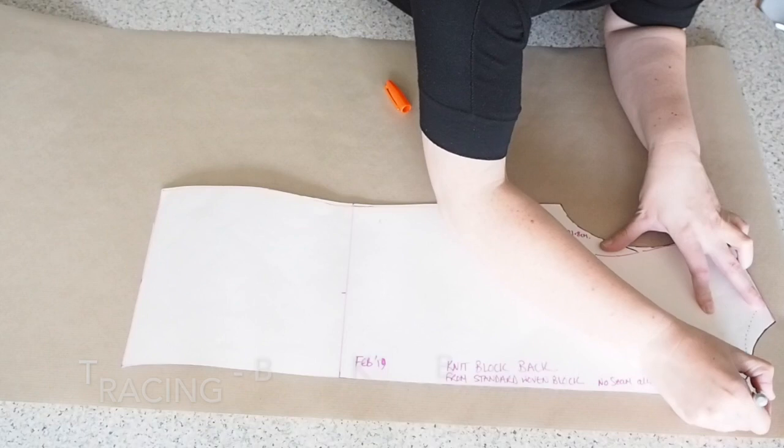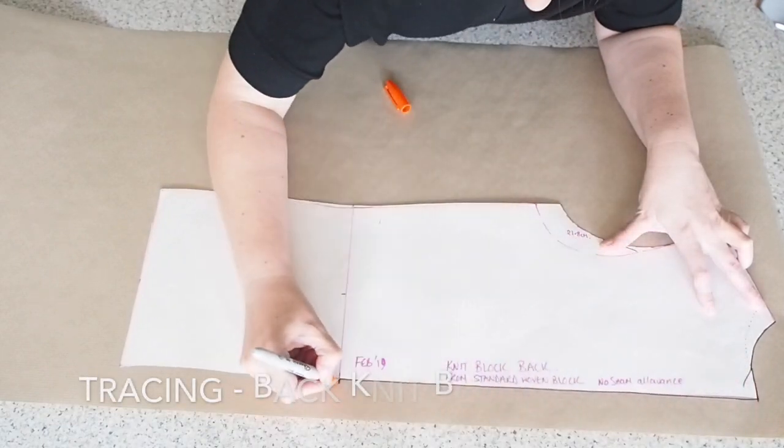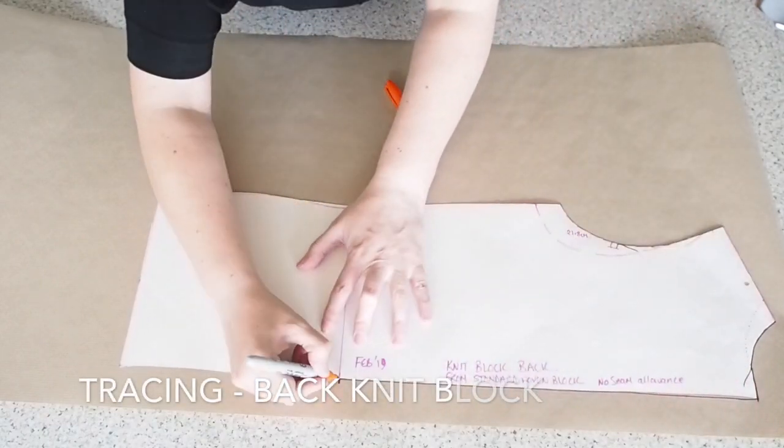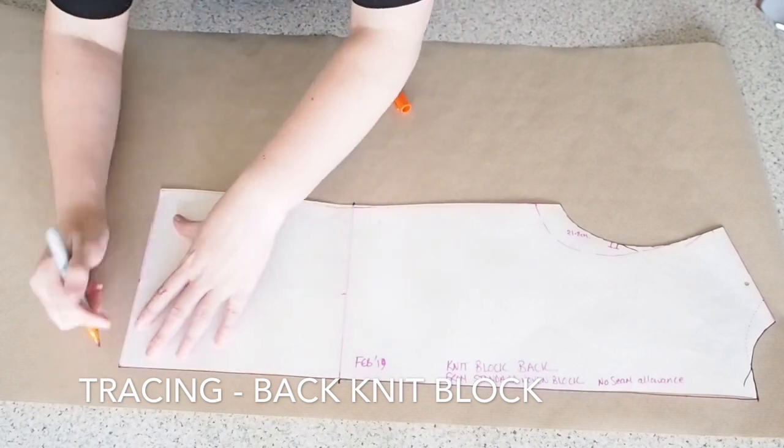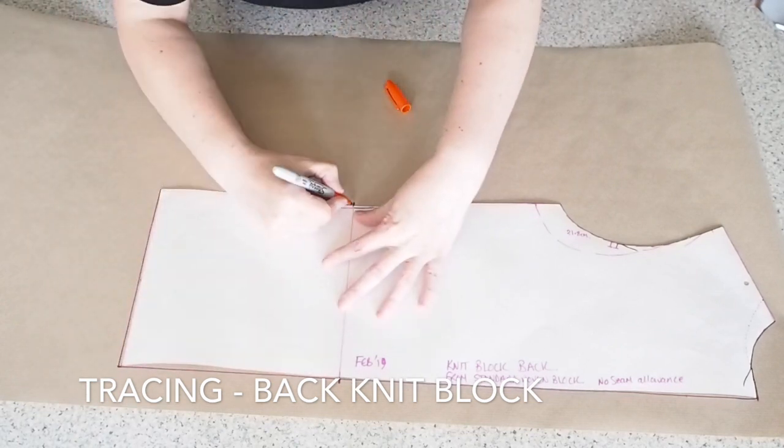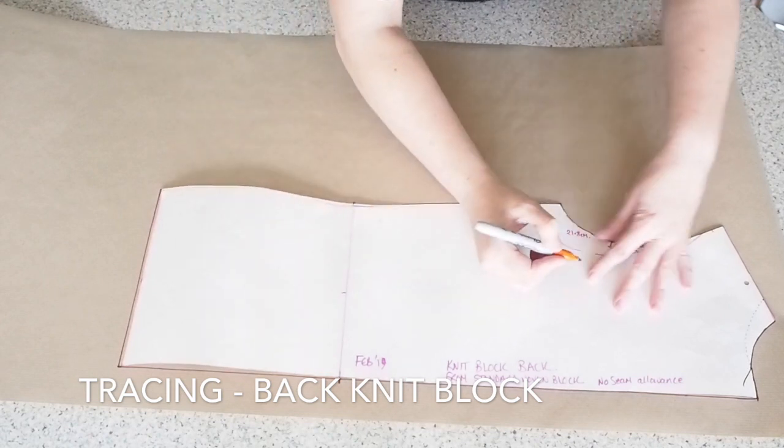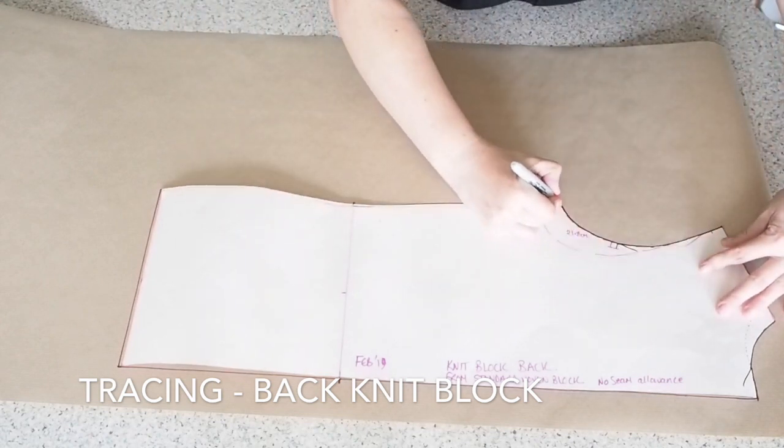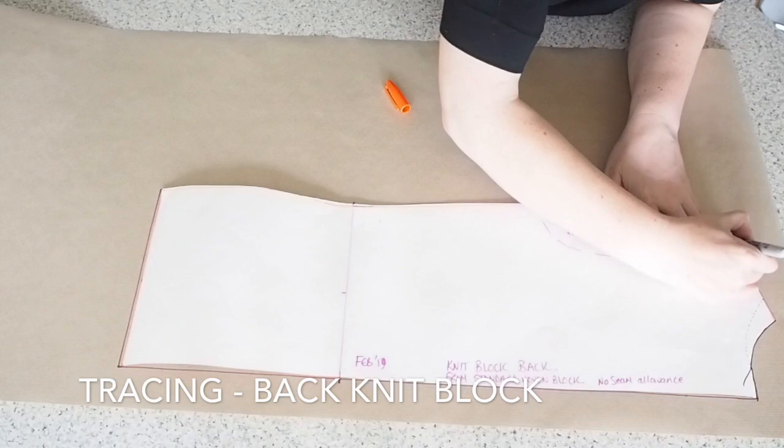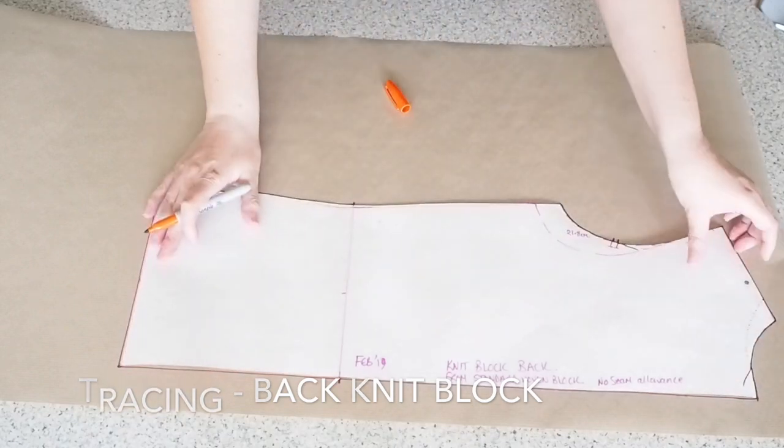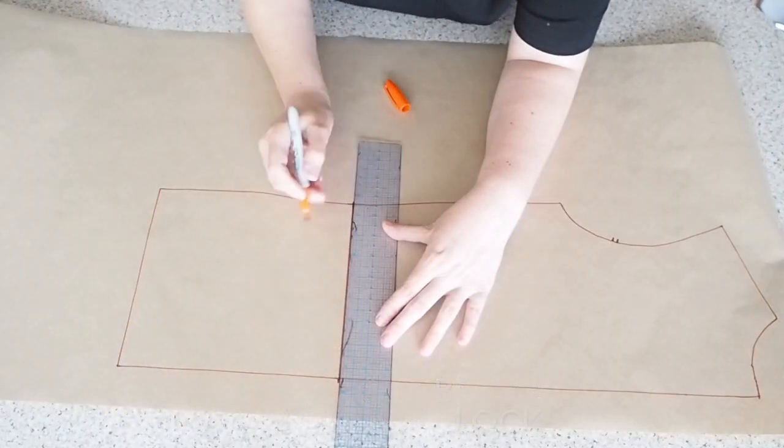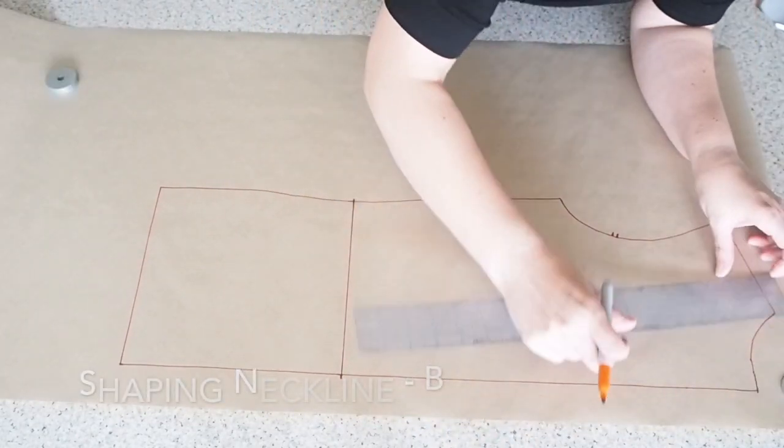So starting with the tracing, I'm tracing here my back knit block onto some fresh paper. And I'm making sure when I do it that I'm transferring all of the markings from my block to that fresh paper. So I have a couple of notches at my arm and I also have my waist. So just drawing that waist in.